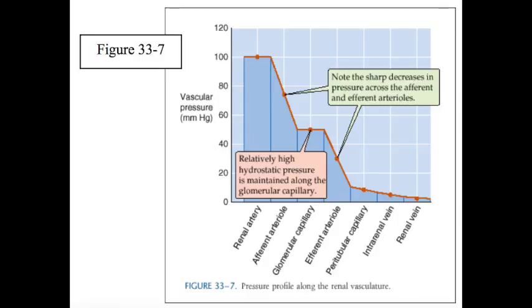For example, if we reciprocally change afferent and efferent arteriolar resistance while keeping total arteriolar resistance and thus glomerular plasma flow constant, compared with an initial condition in which the afferent and efferent arteriolar resistances are the same,